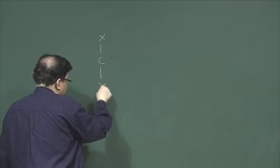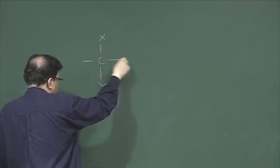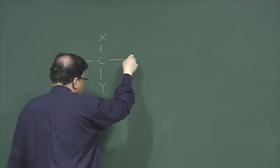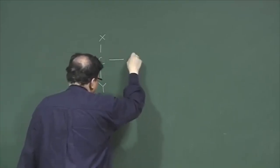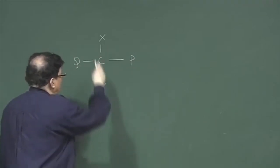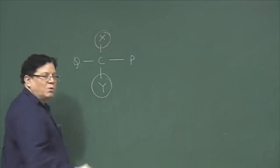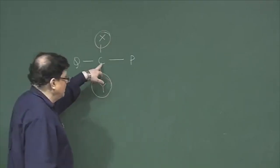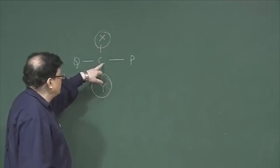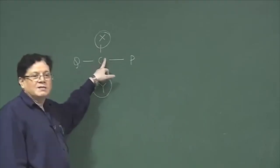If you have a carbon with four ligands attached — say X, Y, P, and Q — and if I want to know the relationship between X and Y, earlier what we have done is we determined the absolute configuration of this. We always concentrated on the stereogenic center.